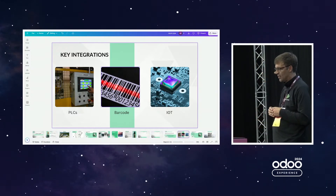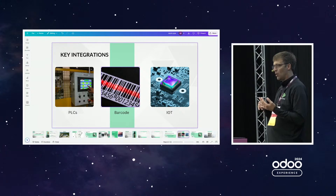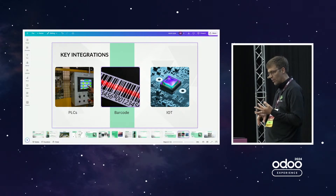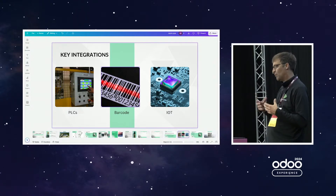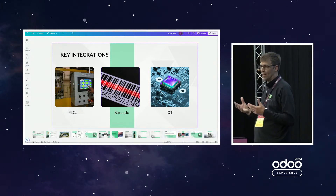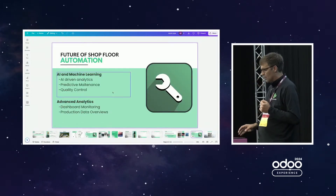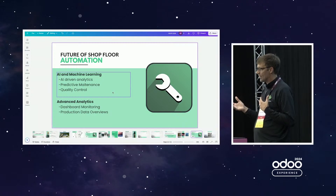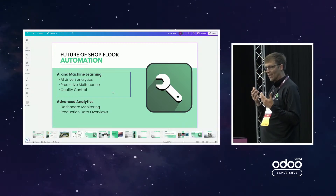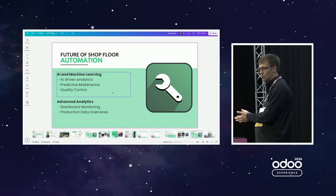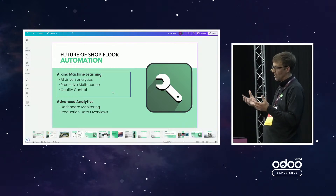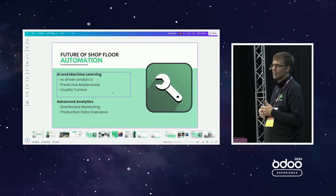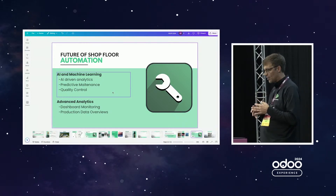Some of the key integrations we have are to PLCs, connecting to different measuring devices, different quality components, barcoding, and IoT — anything IoT-linked like vibration — anything on the IoT link side, we can connect to it and pull that data. One of the things we love is the trend with AI — it's definitely going to make a huge impact in manufacturing. The power of what we're doing here is we're able to collect the data so that we can start to see those trends. We're working with customers to collect data from their shop floor at a very granular level, so that in the coming months and years we can predict outages, maintenance, and all of those things.